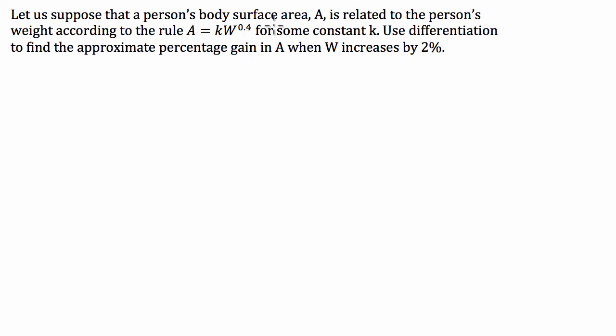So what we have here is we have a function which relates A to W, and we know that W is increasing by 2%. So what we can say here is the change in W over the original W is equal to 2%, or as a decimal, 0.02.